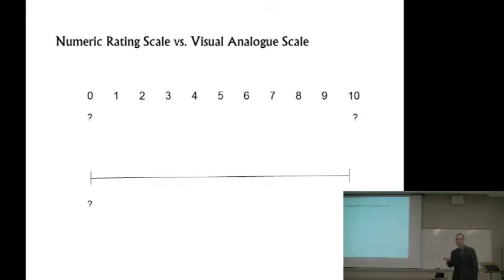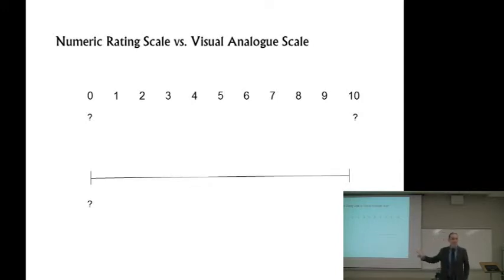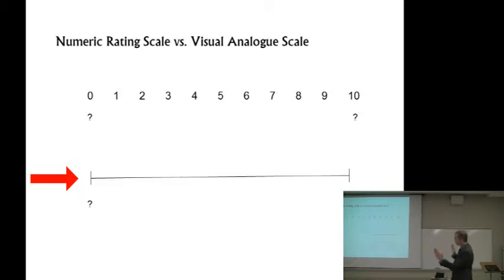First of all, just a quick nomenclature thing. I want to make sure everybody's clear on this, because when I learned about these things back in the 90s, we called everything a VAS — everything was a VAS. The 0-10 scale was a VAS, which isn't true. A visual analog scale is the bottom one there, which is usually a 10-centimeter line that has anchors at either end. The patient puts a mark somewhere on that line, and you use a ruler to measure from the left to wherever they made their mark.